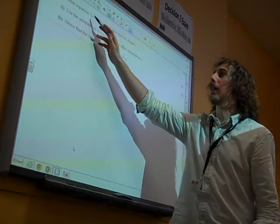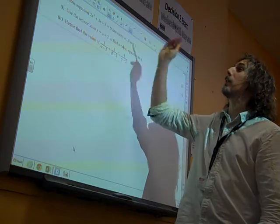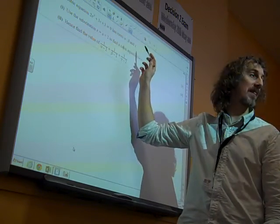Great. So the cubic equation 2x cubed plus 3x plus 3 equals 0 has roots alpha, beta, gamma.